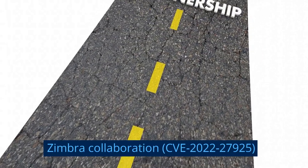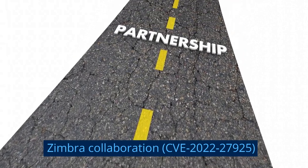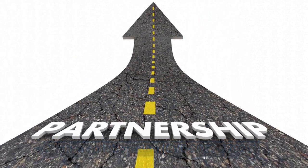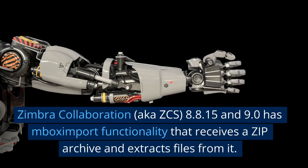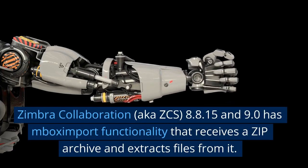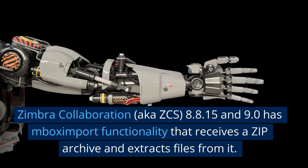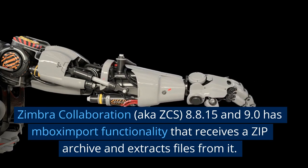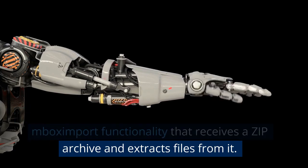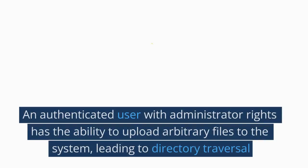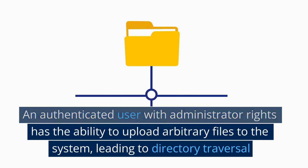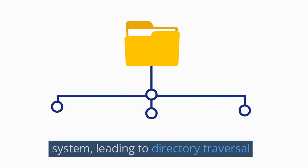Vulnerability number eight — Zimbra Collaboration, CVE-2022-27925. Zimbra Collaboration (ZCS) versions 8.8.15 and 9.0 has an mbox import functionality that receives a zip archive and extracts files from it. An authenticated user with administrator rights has the ability to upload arbitrary files to the system, leading to directory traversal.